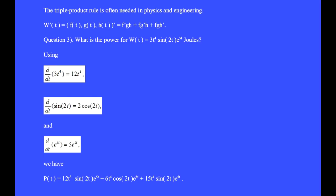The triple product rule is often needed in physics and engineering. The derivative of f(t)g(t)h(t) equals f'gh plus fg'h plus fgh'.